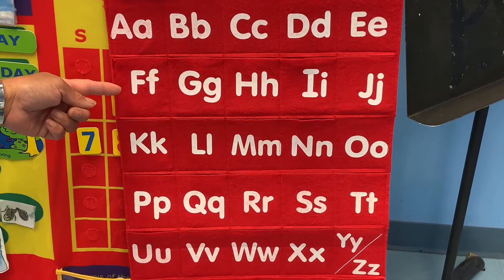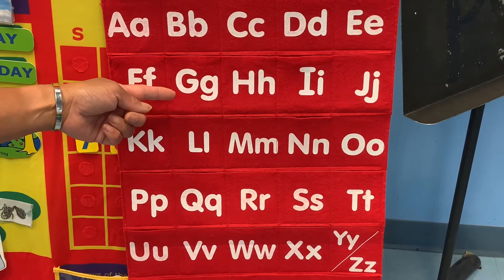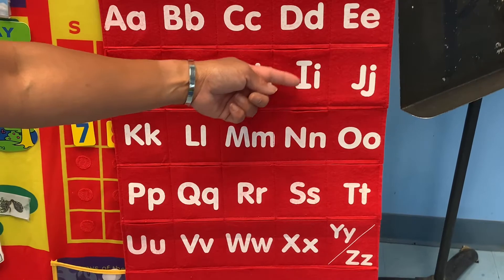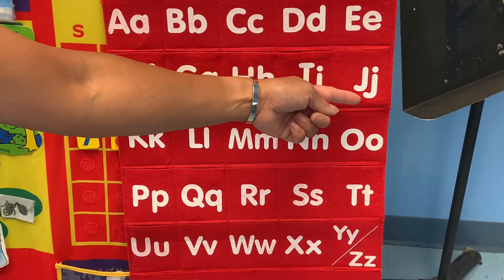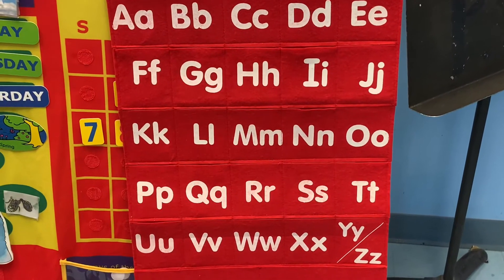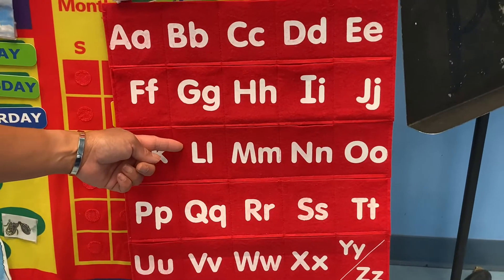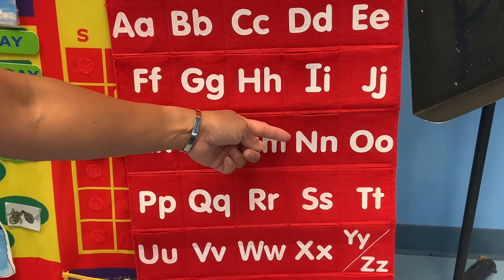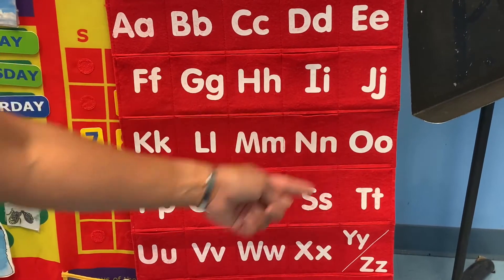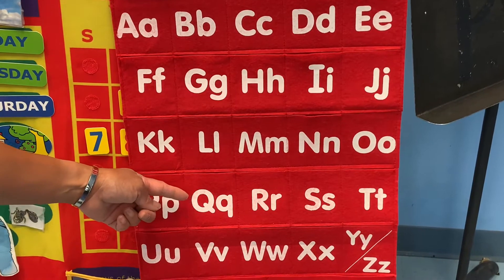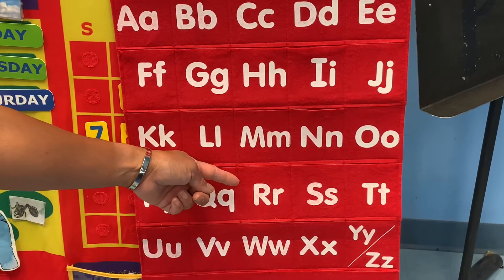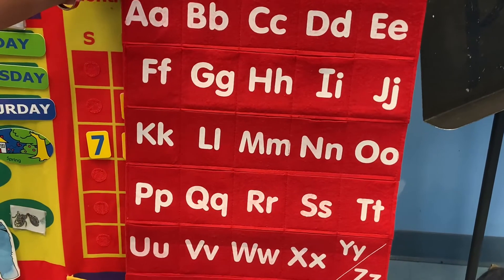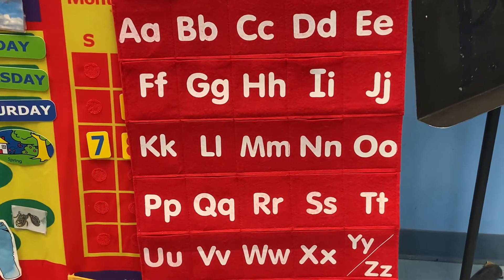F doesn't look the same. G looks different. H looks different. I — very different, has an ice cream on top. Uppercase J, lowercase J — very different. L looks different. M — pointy, not pointy. N — pointy, one rainbow bump, that looks different. Q — very different. R — different. T looks different. So those are the letters that look different from uppercase to lowercase. Great work.